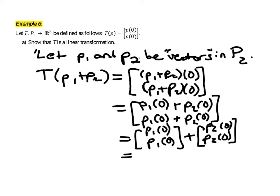And this vector, whose components are P1 of zero, P1 of zero, that's T of polynomial P1. And similarly, the second vector, whose components are P2 of zero, P2 of zero, that's the transformation of the polynomial P2.